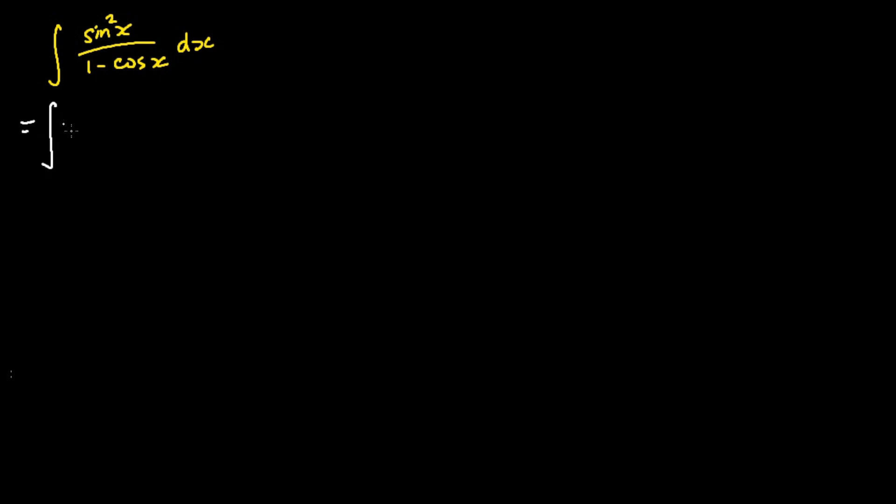The very first step we're going to do is multiply the numerator and the denominator by 1 plus cosine x. My numerator will be sine squared x times 1 plus cosine x and my denominator will be 1 minus cosine x times 1 plus cosine x.